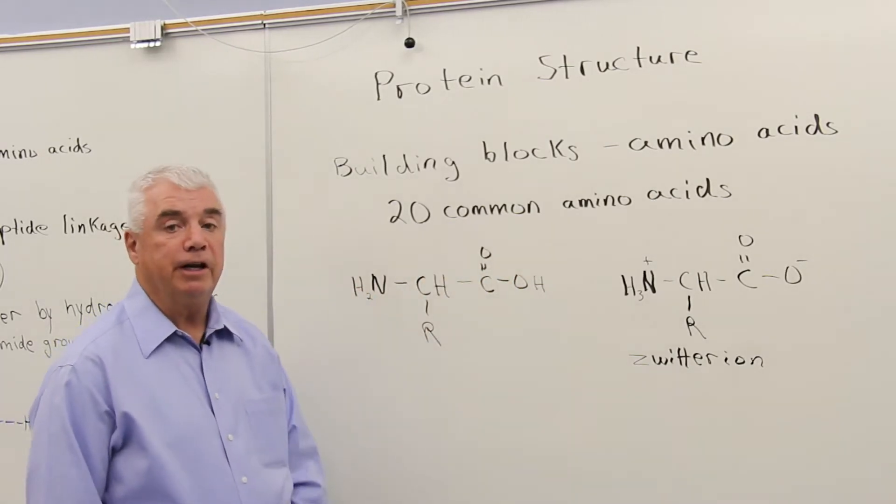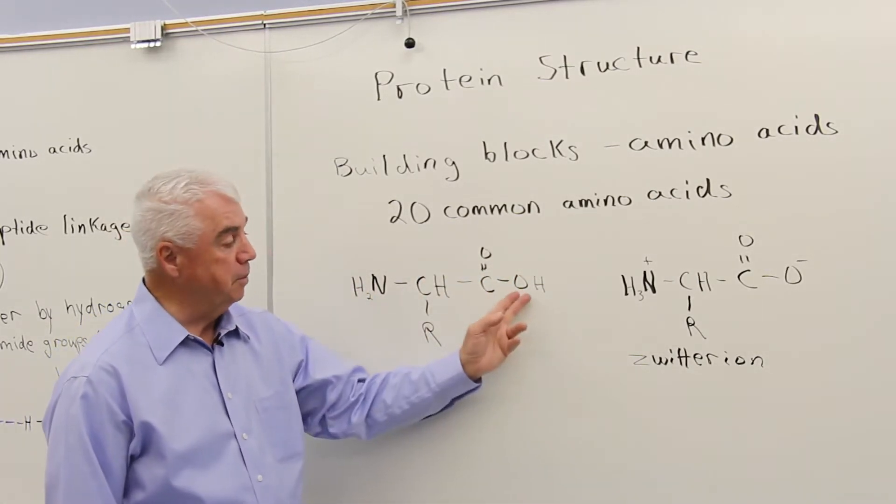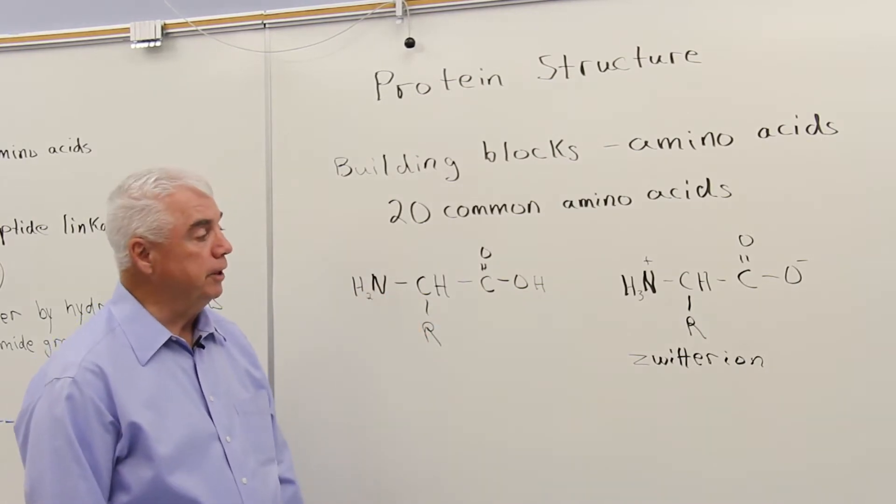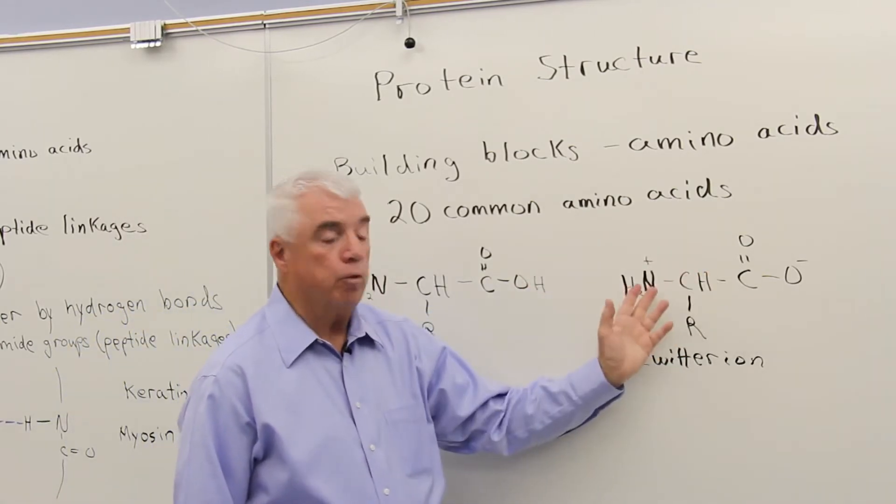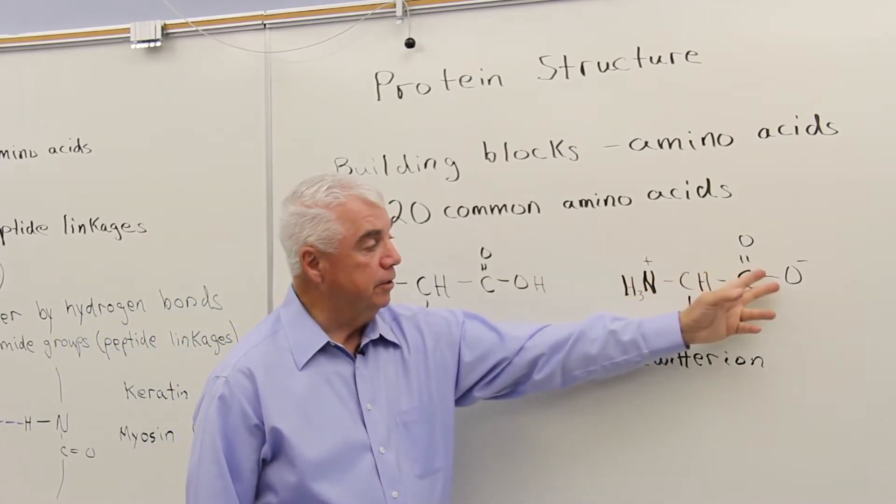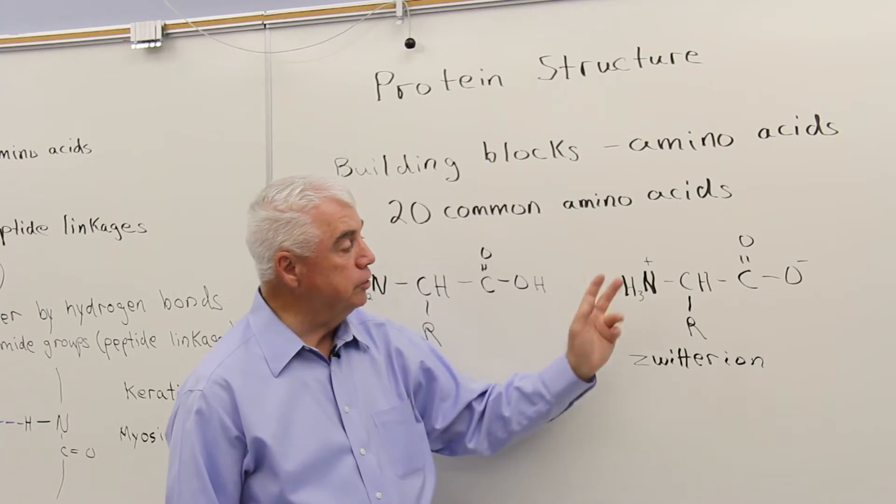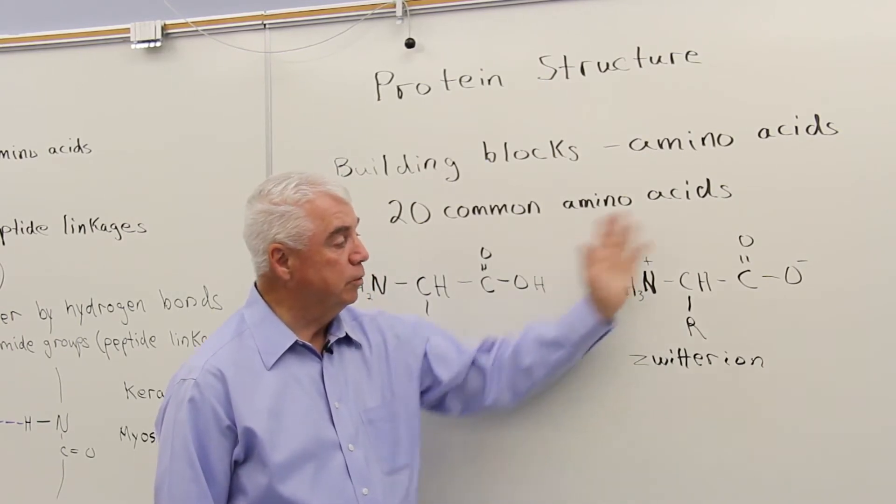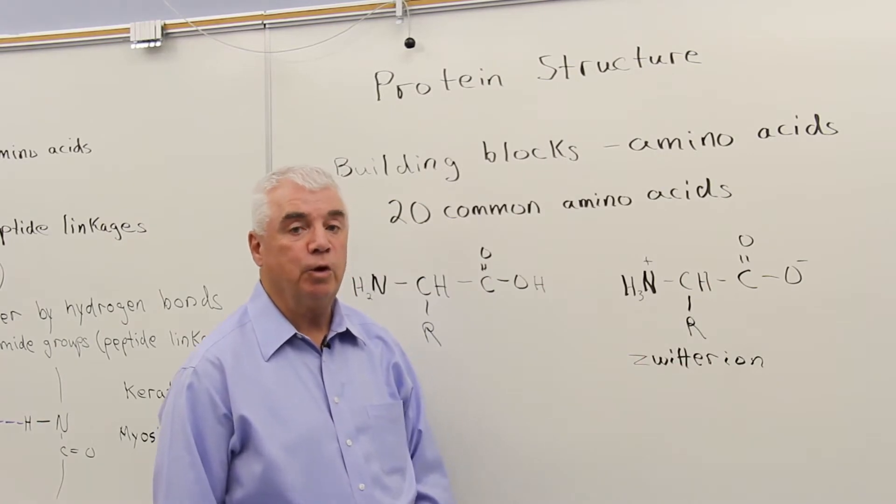And so we actually have an exchange of a proton that takes place. This hydrogen is attracted to the nitrogen, and as it moves over there, we've created two charges. The oxygen has a negative charge now, and this end of the molecule has a positive charge. We refer to these as zwitterions.